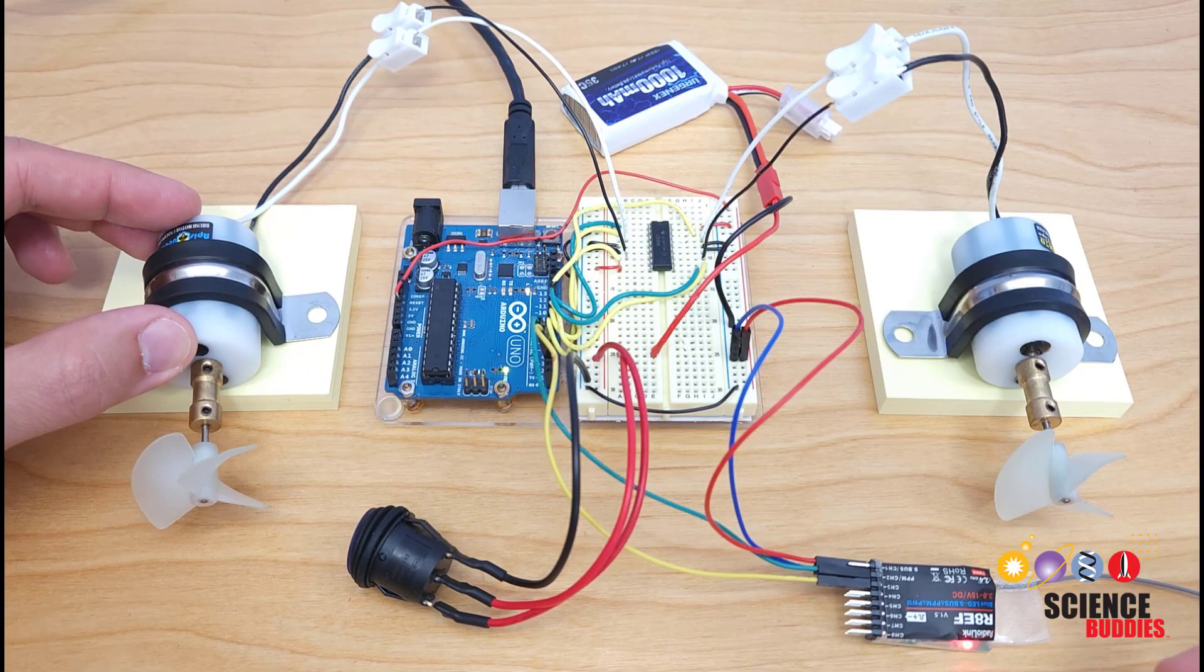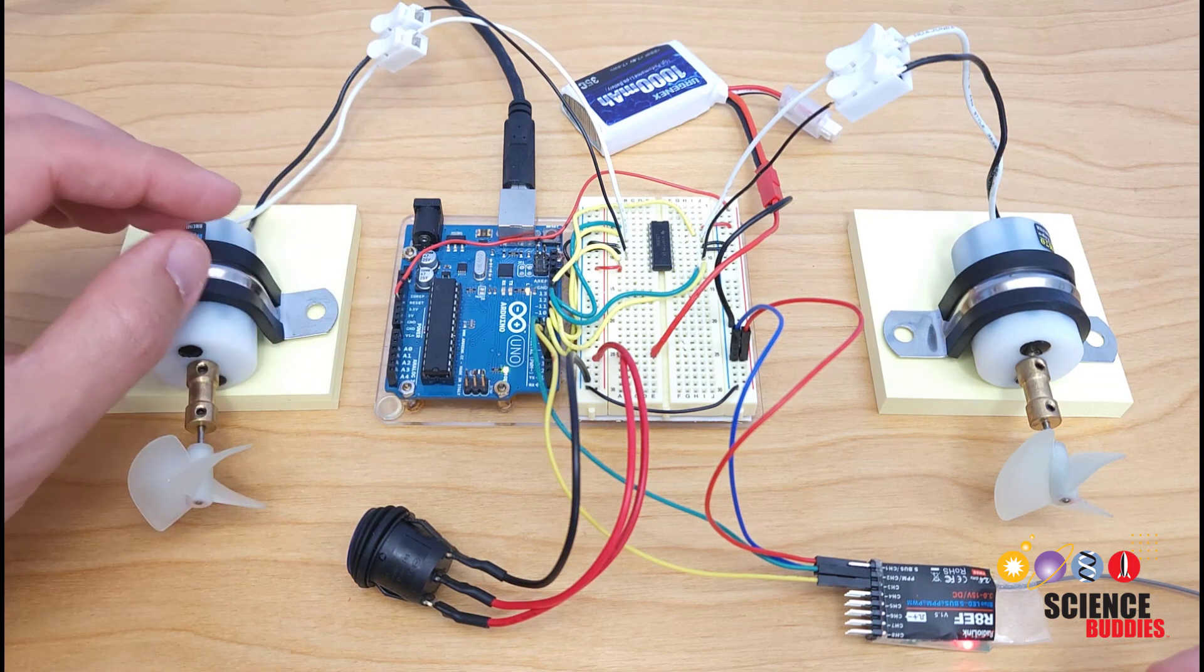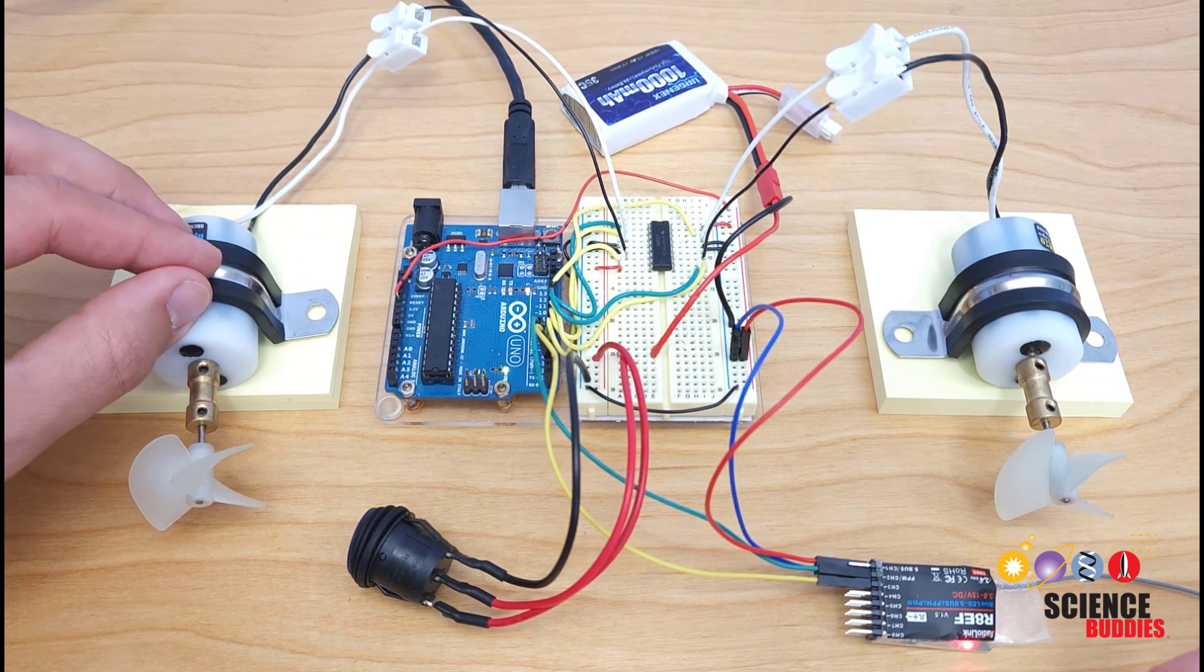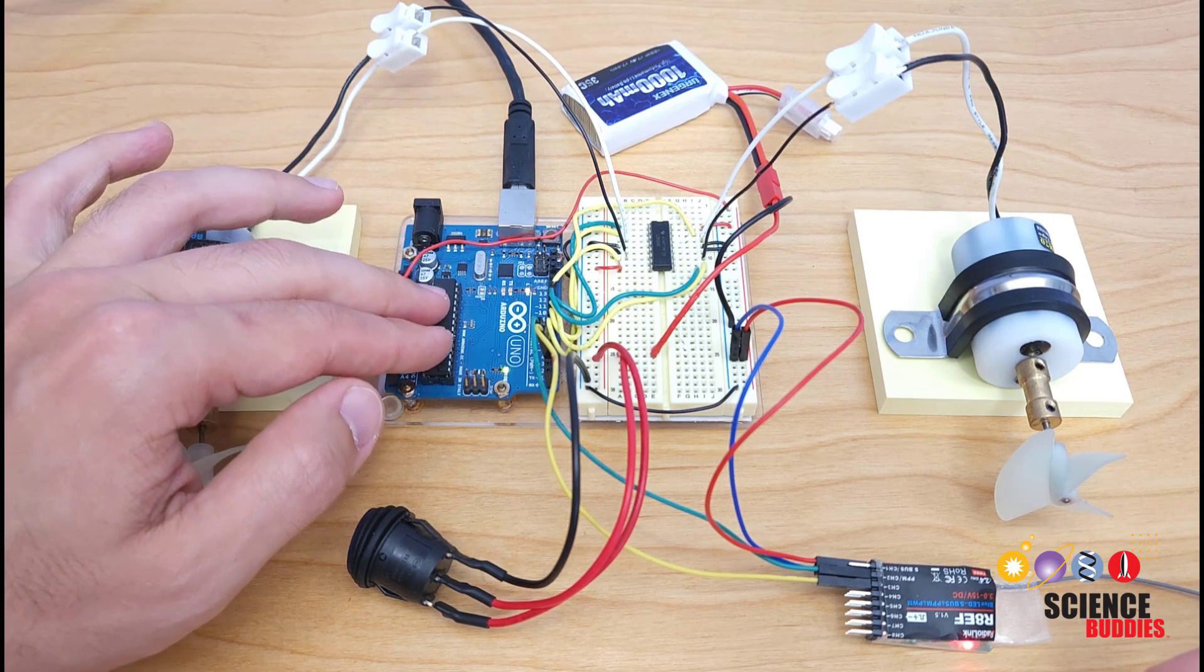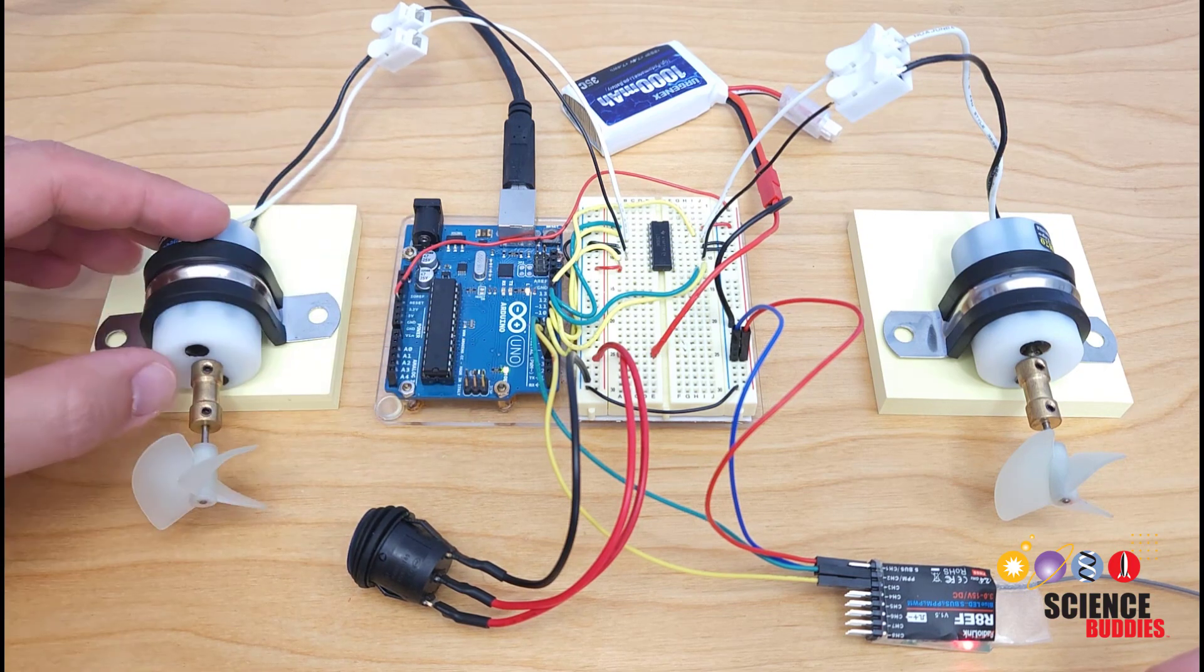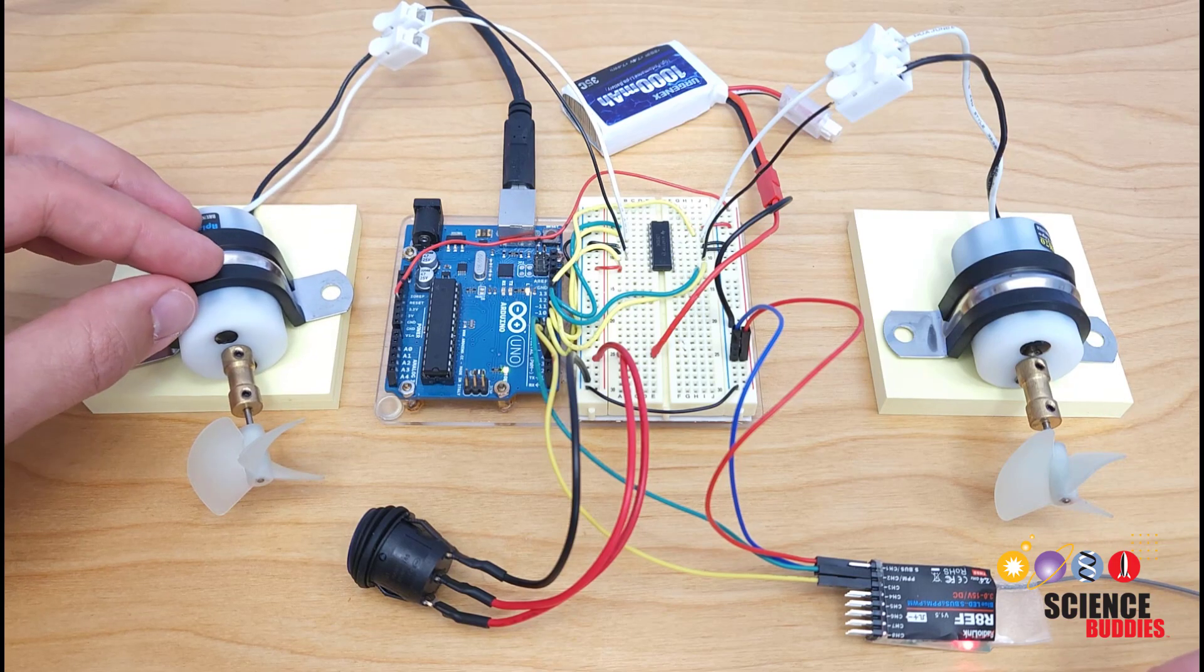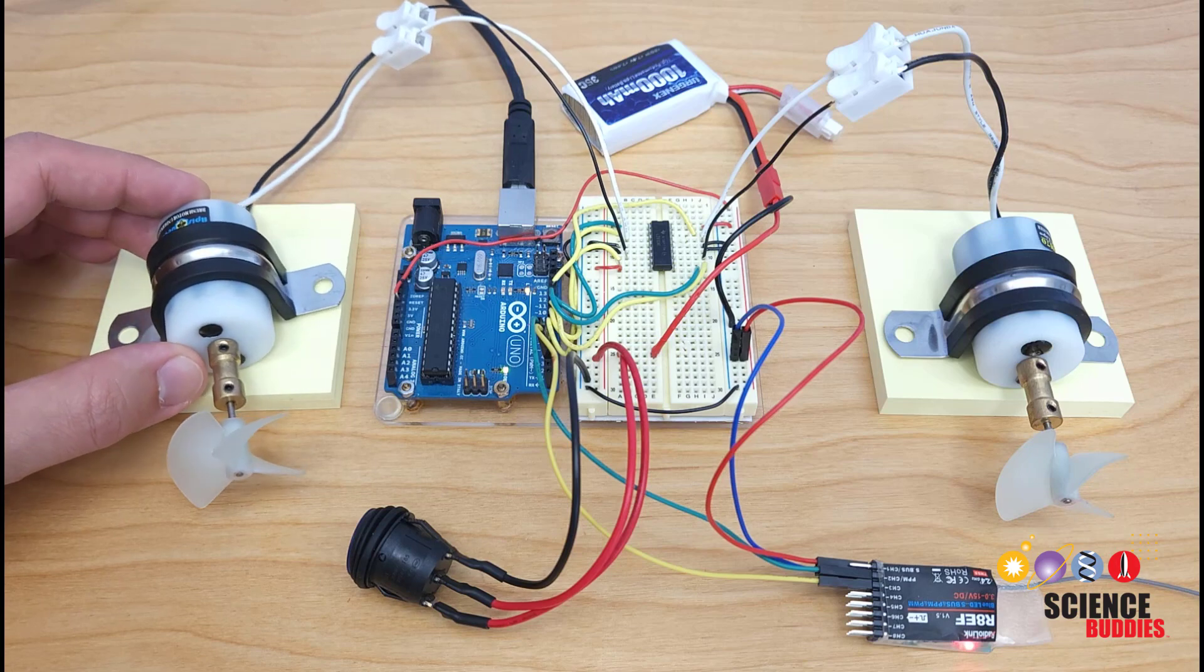Before we get started with the physical build of the boat, let's do an overview of the circuit. And before we do that, I want to point out that the parts list, circuit diagram, and code for this project are all available in a link in the video description. So I'm not going to go through a step-by-step build of the circuit in this video. This is going to be an overview. Again, if you want the diagram and parts list so you can build it yourself, check out that link in the description.